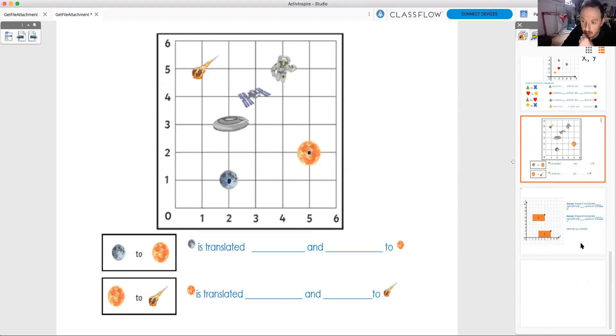And then the final part of today's lesson is these two lovely rectangles, A and B. We've got shape A is translated something, right or left. And then something, up or down, to shape B. And they've done a point on the shape, so it makes it easier for us to count. And so shape B, what if that moved to where shape A is? How far left would it go? How far up would it go? And then, once you've filled in those translations, you might be able to notice something. So, write down what you notice.